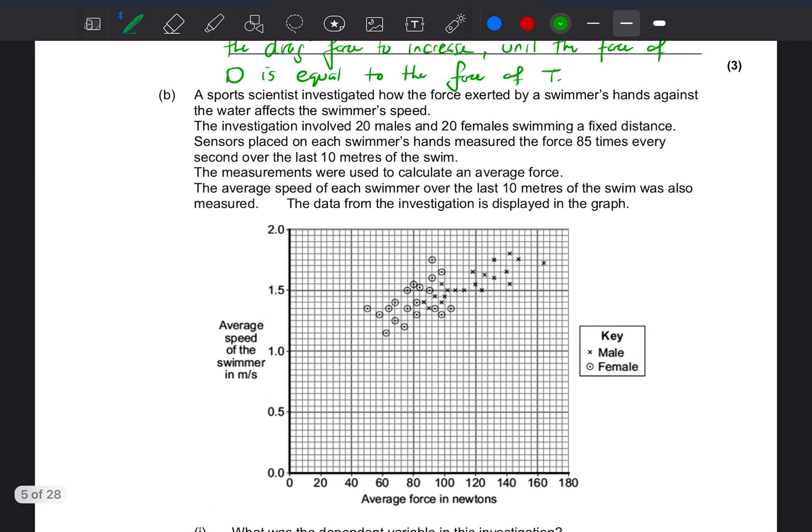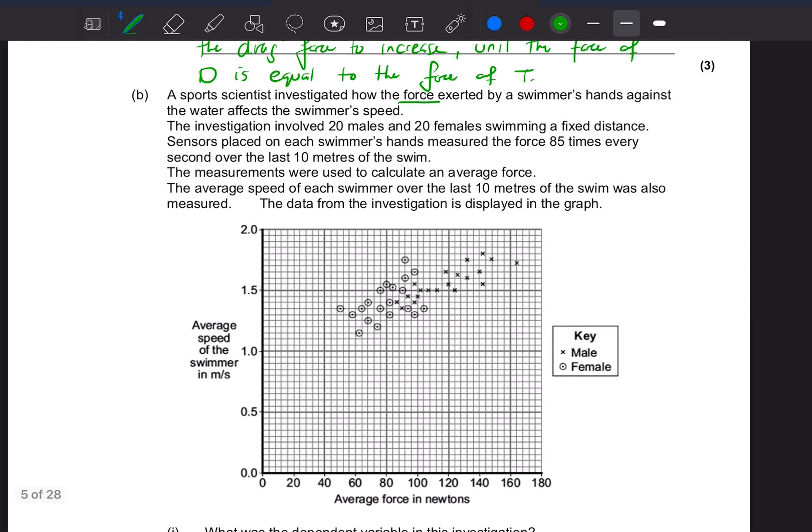Okay, long thing to read. A sports scientist investigated how the force exerted by a swimmer's hand against the water affects the swimmer's speed. So they are looking at changing force and looking at how that changes the speed. So in terms of this question, it's about an investigation. So we can work out what the different variables are. So they looked at how the force exerted, so that's what they changed, so that's going to be the independent against the water, affects the swimmer's speed. So they're looking at, so how did changing the independent variable, how does that change the dependent? That's what you measure.